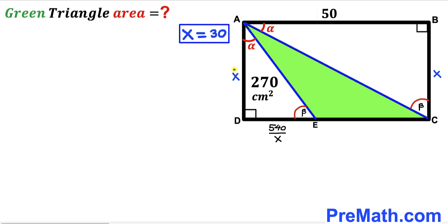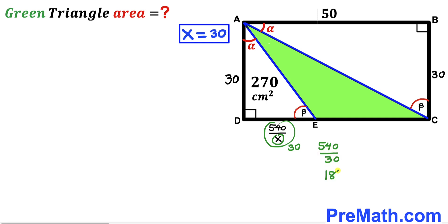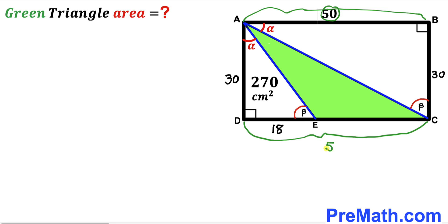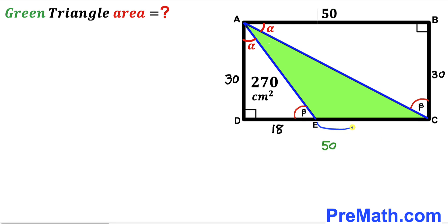Substituting X = 30, we get BC = 30 and AD = 30. The segment DE = 540 / 30 = 18 units. Since the whole side CD equals AB = 50, the remaining segment EC = 50 − 18 = 32 units.